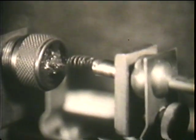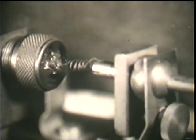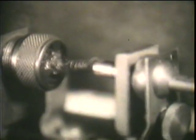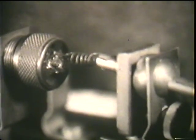When the cat's whisker touches certain parts of the crystal, the apparatus allows an electric current to flow more freely in one direction than the other. In other words, it rectifies or detects alternating current.